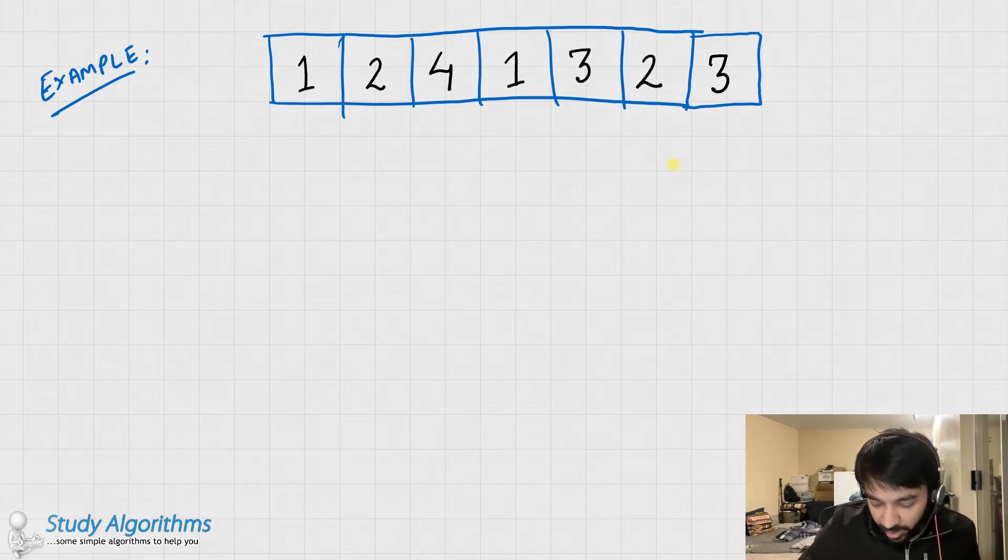So given this example, we need to return 4 as the result. So as you can see, the number 1 occurs twice, the number 2 is occurring twice, and the number 3 is occurring twice. So for this example, the answer would be 4.